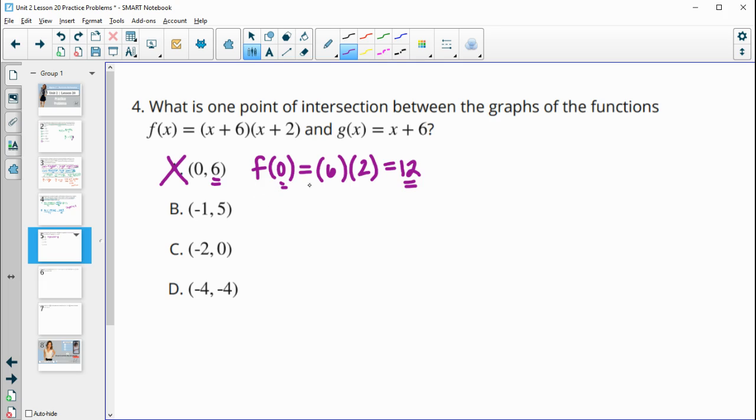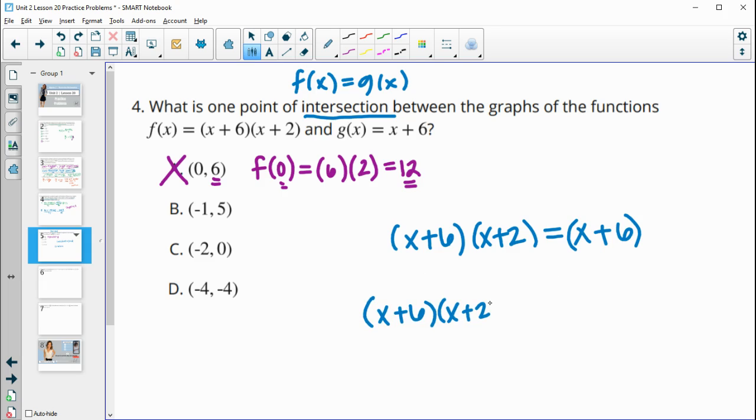Otherwise the way that you solve this, intersection means that it's where F of X equals G of X. So you can do X plus six times X plus two, which is the F function, is equal to X plus six, which is the G function. We see that they share a common factor. So I'm just going to subtract this whole factor over to the other side. So we have X plus six times X plus two minus the X plus six factor. So then after I subtract it off of this side, it'll be zero.